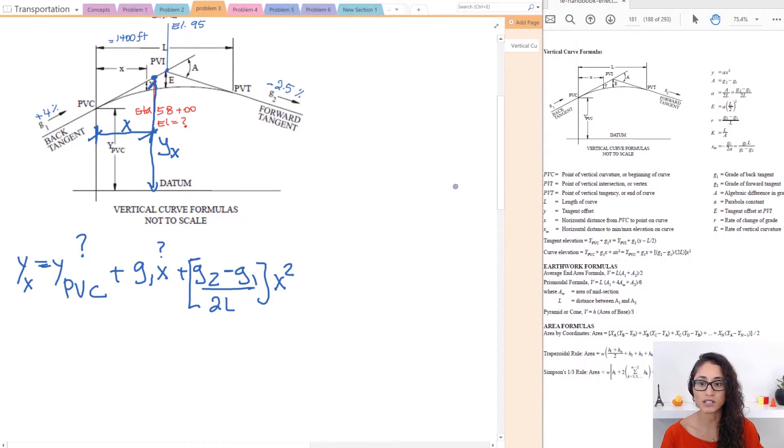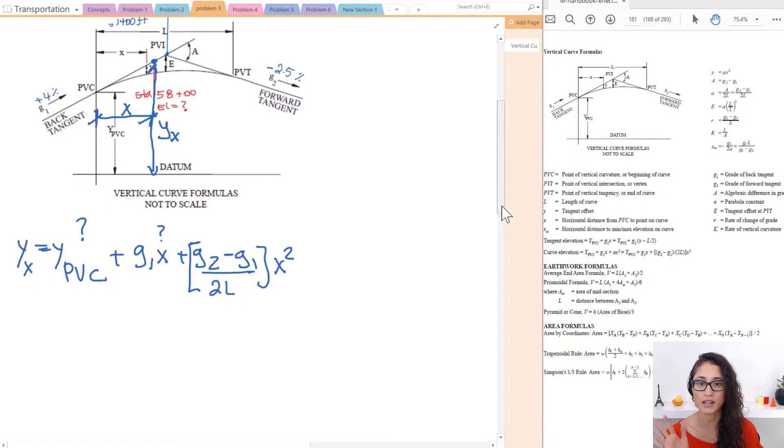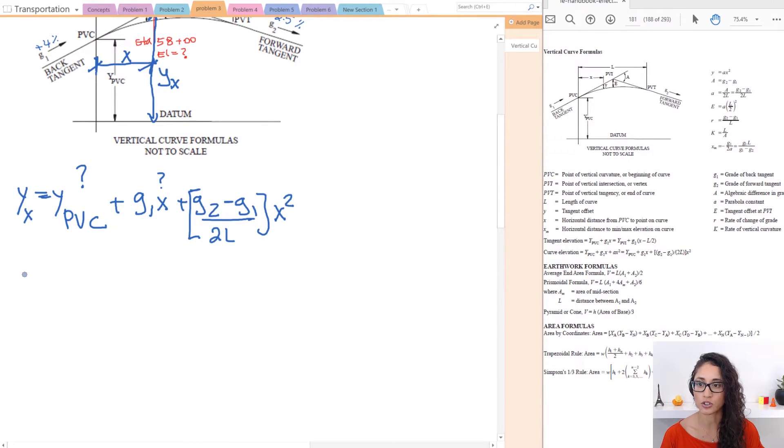Okay so let's start solving for those two terms and then the rest is just really easy, just plug in. So Y PVC, note that this is the same as elevation at PVC. They're the same exact thing. So usually elevation is denoted as Y and then station is X.